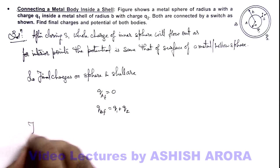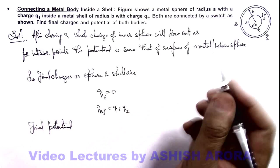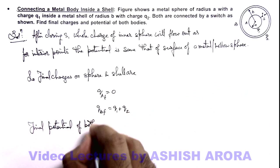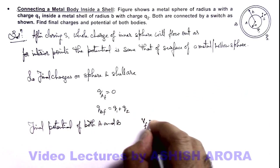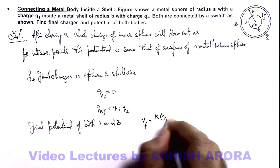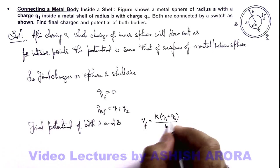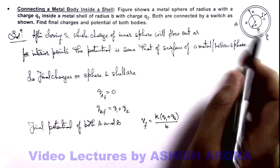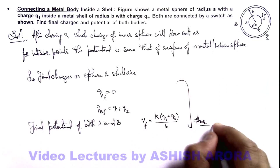And if we calculate the final potential - as the two are connected they will always be at same potential - so final potential of both A and B can be given as Vfinal = k(q1 + q2)/b. This is the potential on the surface of the outer shell, and at every interior point it remains same. So these are the answers for this problem.